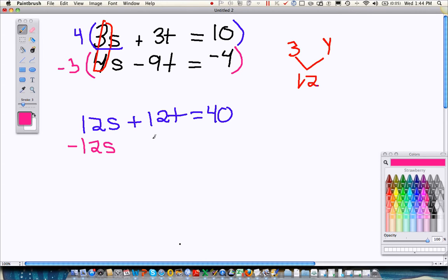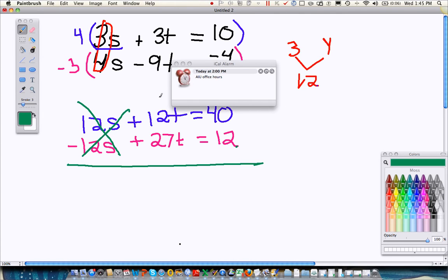Negative 3 times negative 9 would be positive 27, and be really careful with your signs. Negative 3 times negative 4 would be positive 12. Now what we're aiming to do is add these equations together. So when I add my S's together, 12 and a negative 12, they go away. That was my whole goal in doing that and getting what we call set up for elimination. That's the entire idea behind this theory.